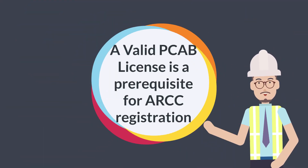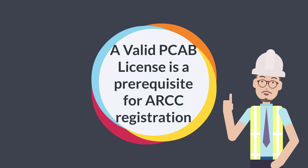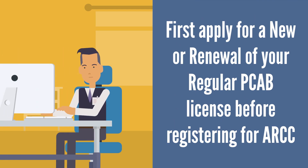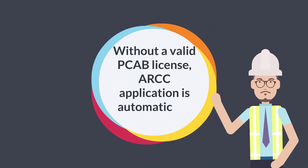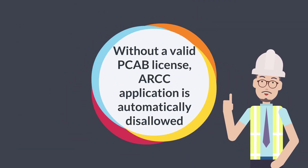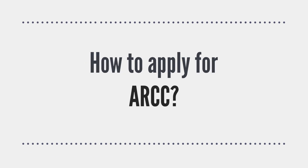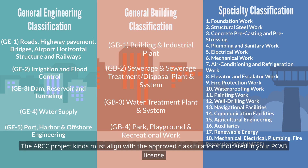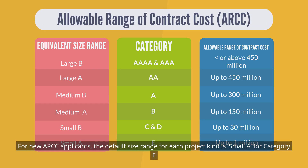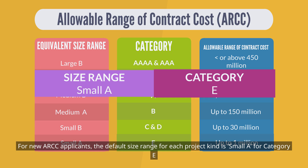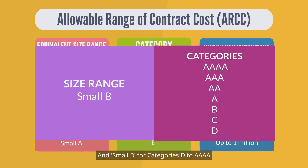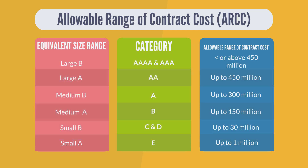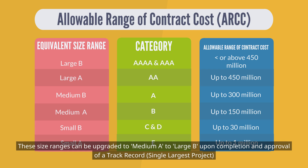Please take note that a valid PCAB license is a prerequisite for ARCC registration. This means that you must first apply for a new or renewal of your regular PCAB license before registering for ARCC. Without a valid PCAB license, ARCC application is automatically disallowed. The ARCC project kinds must align with the approved classifications indicated in your PCAB license. For new ARCC applicants, the default size range for each project kind is Small A for Category E, and Small B for Categories D to Quadruple A. These size ranges can be upgraded to Medium A to Large B upon completion and approval of a track record single largest project.